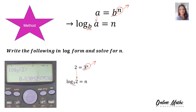There is a special button on your calculator — you can see there's a log and then two little squares. You press that button, and on the screen you put the 3 in the first base place, then put the 2 in the other square, and press equals. Your answer is 0.63.